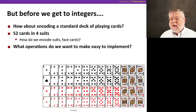But before we get to integers, I just wanted to talk about encoding problems in general. So suppose we have a 52 card deck, the typical playing card set up with 13 cards of each suit, organized into four different suits.